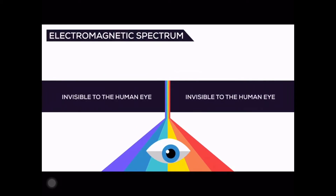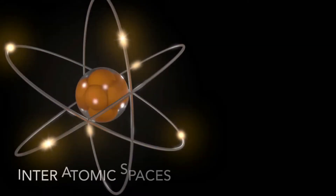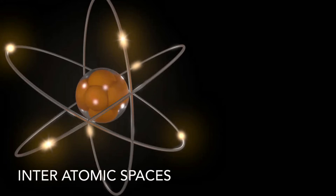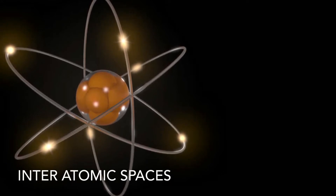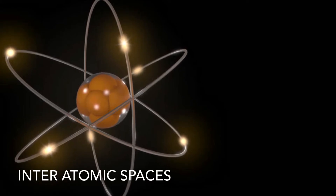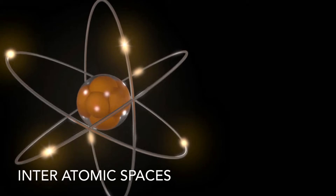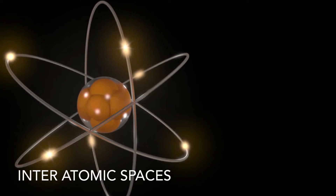One of the reasons light passes through glass is interatomic spaces — these are the spaces or areas present between two successive shells or orbits. So there is really a plenty amount of area for all the light photons, or light particles, to just move through.